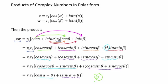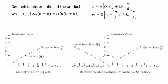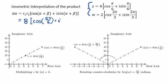Let's look at a geometric interpretation. Given two complex numbers Z and W in polar form, we find the product by multiplying their moduli. The arguments add: pi over 6 plus 2 pi over 3 gives us 5 pi over 6, so the product is expressed as cosine 5 pi over 6 plus i sine 5 pi over 6. Using shorthand notation, we can write this as 8 cis 5 pi over 6.